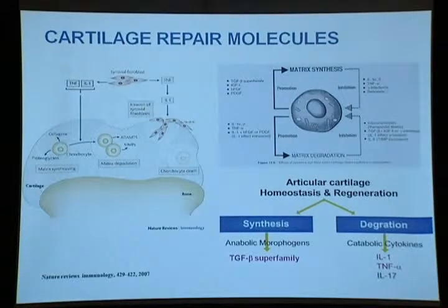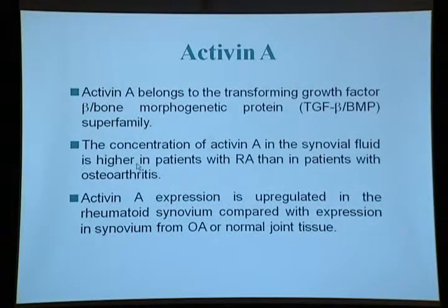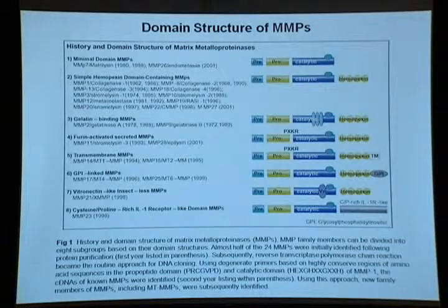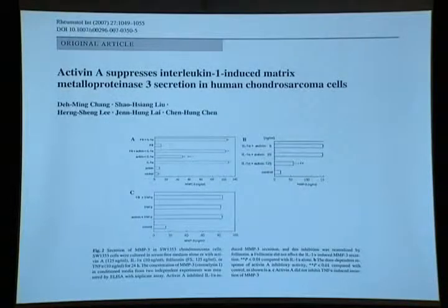If we cannot prevent synovial hyperplasia, the synovium will invade the cartilage and cause degradation. The second target is how to stop cartilage degradation. Cartilage synthesis depends on the TGF-β superfamily, and degradation may be induced by IL-1, TNF-α, and IL-17. We focused on two molecules: activin A and GDF-5. Activin A belongs to the TGF-β family, and its concentration in joint fluid is higher in RA patients than OA patients.